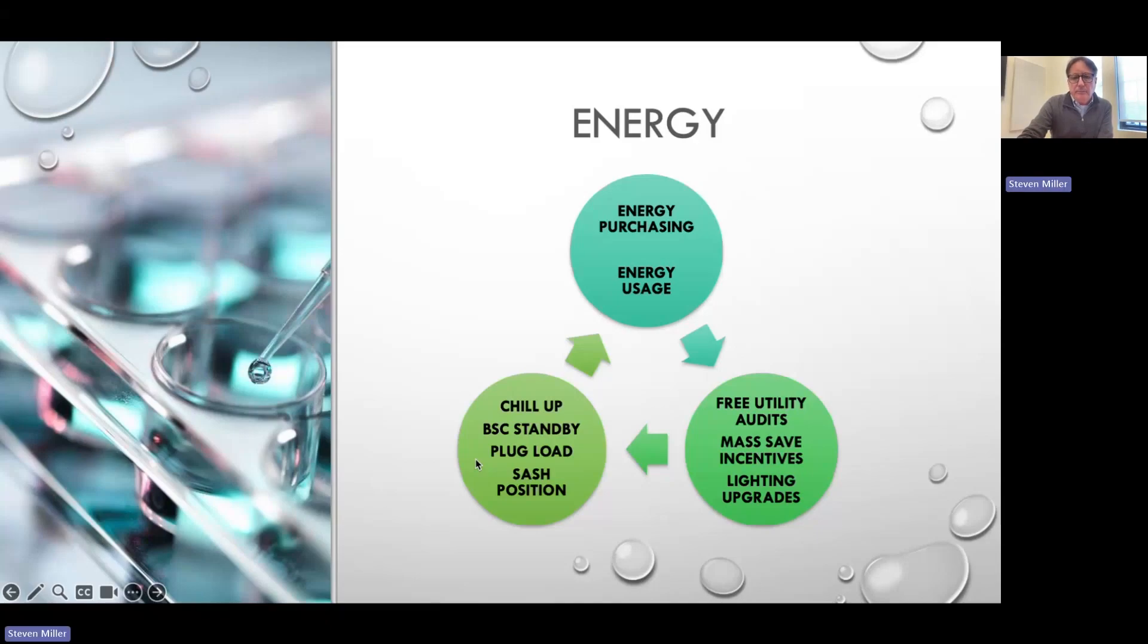Then I would start to look at your individual equipment. So chill up. Can you take your minus 80 ULT from minus 80 to minus 70? Studies have shown that this has no impact on your samples. You can save up to 30 percent of energy and a lot of utilities will give you an incentive to do that. I would also look at your biosafety cabinet and how you use that and make sure you use it in the standby mode when it's not being used or better off turn it off. I would look at your plug load on your bench. Everything that plugs in on the bench doesn't have to be on 24-7. Do you really need that water bath on on a Sunday? So take a good hard look at that and there's very easy management strategies to automate that and very inexpensively.